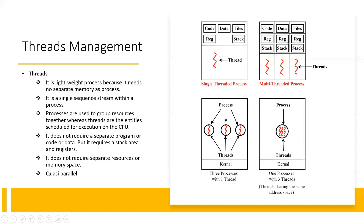Each thread is separate in terms of stack and register. But the three threads, because they belong to one process, share the common code, data, and program file. The three threads share these resources because they are part of one process. So we distinguish between a single-threaded process and a multi-threaded process.